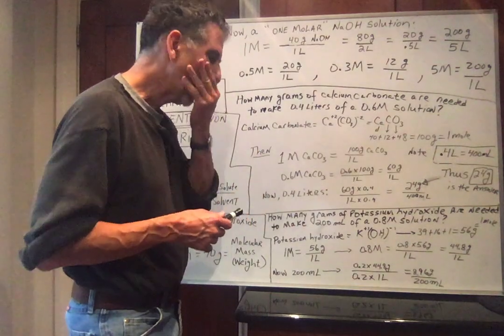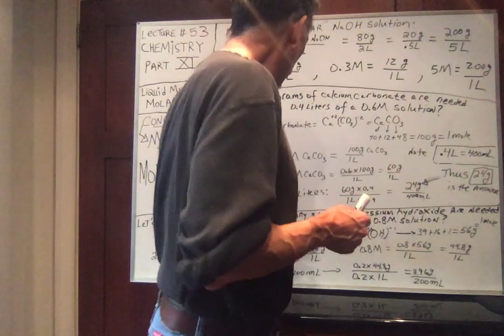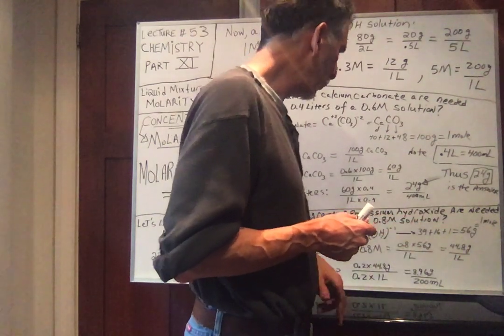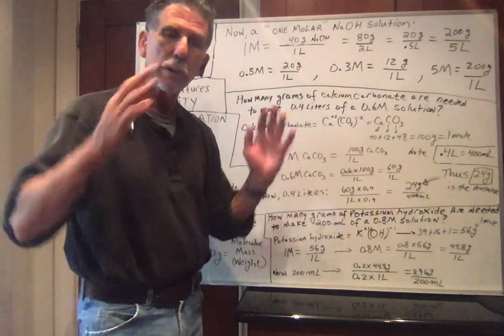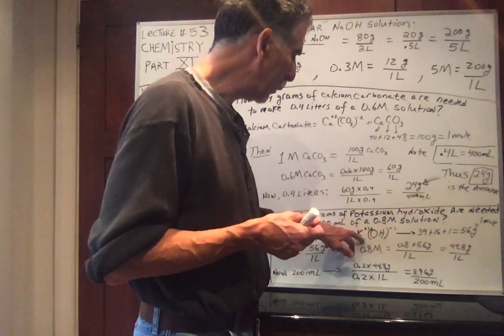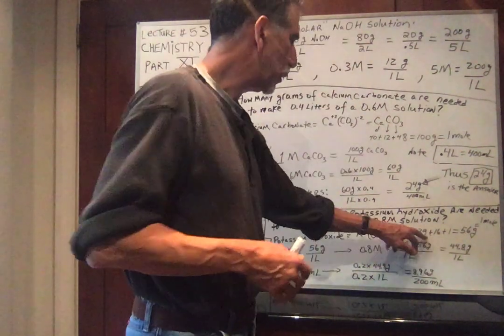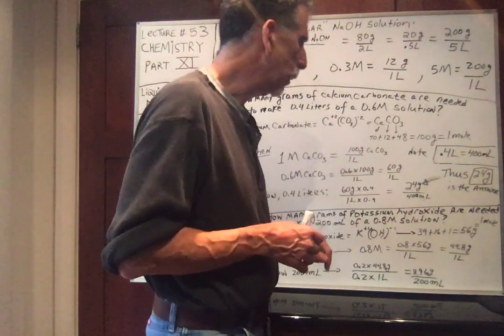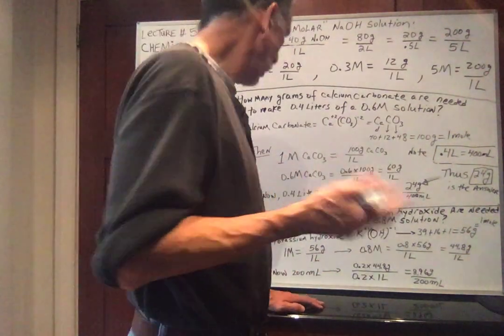One quick finishing problem. How many grams of potassium hydroxide are needed to make 200 milliliters of a 0.8M solution? So let's go. Potassium hydroxide. Potassium is group one. Hydroxide is OH minus one. So we have K is plus one, OH is minus one. So we need one potassium with one hydroxide polyatomic. Again, periodic table. Potassium is 39, oxygen 16, hydrogen 1. Add those together, I think we get 56 grams. So 56 grams of potassium hydroxide is one mole.